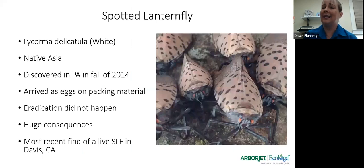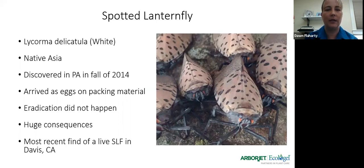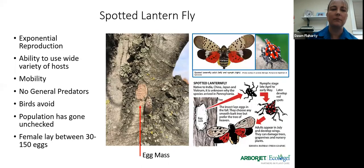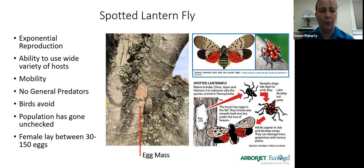The spotted lanternfly has been an issue on the east coast and has now actually made it out to California alive, identified in Davis, California. We have not yet heard of it actually infesting, but be aware of it and look for it. This is one of those pests that sadly natural predators don't even want to deal with. It lays very large egg masses on trees that are easy to identify. The pest itself has spotted wings that when opened reveal a bright red color — pretty hard to mistake. The immature state has a kind of scary red appearance.